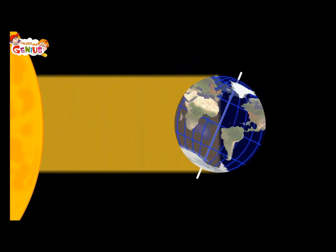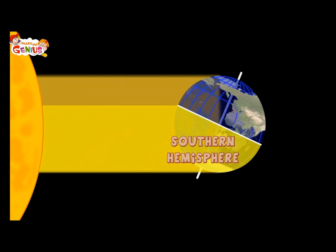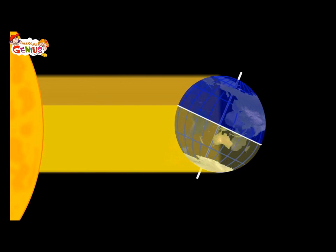The heat of the sun is coming towards the Earth. The lower part of the Earth, which is also known as the Southern Hemisphere, is getting direct sunlight. Yeah! The upper part is also getting heat and light from the sun, but it is lesser than the sun's heat and light on the bottom part of the Earth. You are correct.